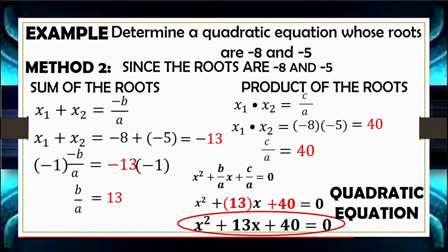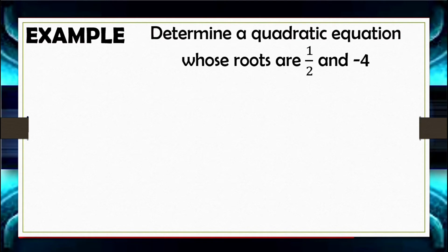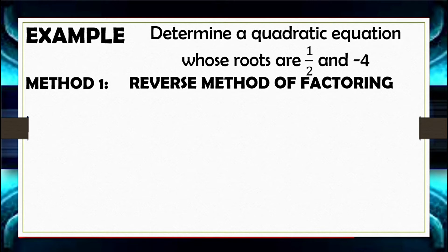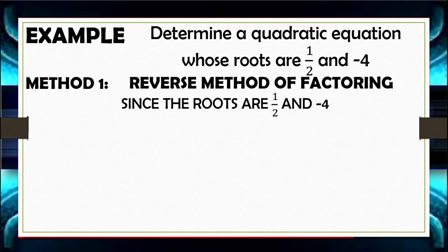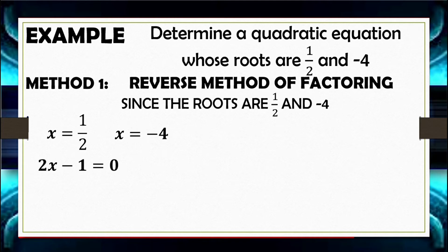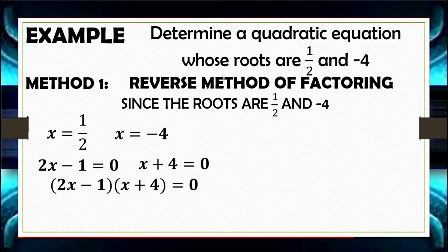This is similar to the equation from our first method. Now let's engage roots with a fraction. The roots of our quadratic equation are 1 half and negative 4. Applying the reverse method of factoring: X equals 1 half gives 2X minus 1 equals 0 (using cross multiplication), and X equals negative 4 gives X plus 4 equals 0. So quantity 2X minus 1 times quantity X plus 4 equals 0.